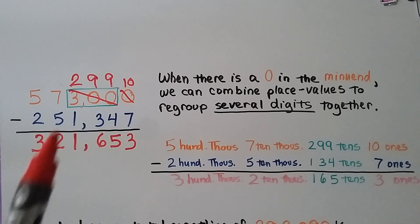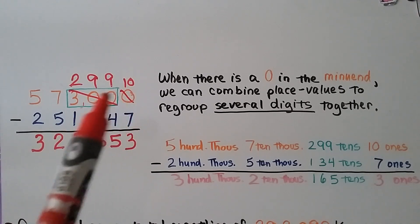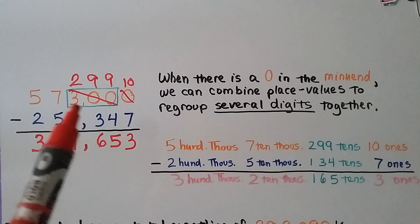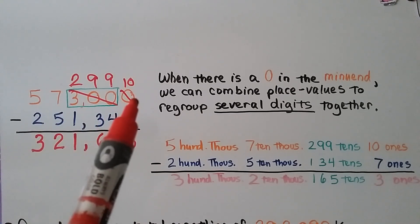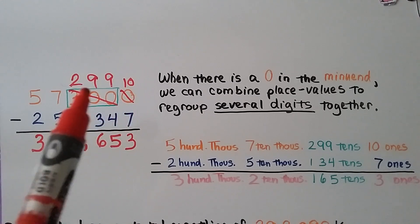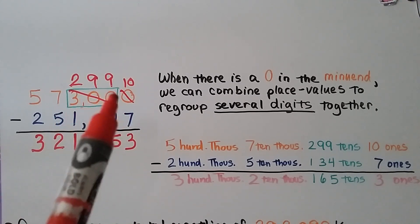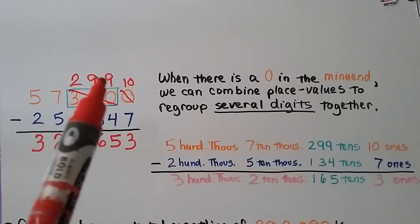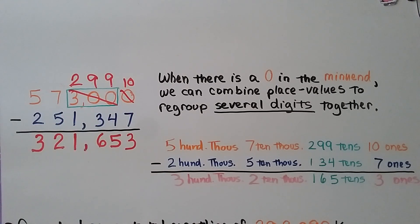We couldn't regroup from those place values because they were all 0s, so we grouped them together. Notice I didn't include the ones place when we did this, because that's the one that needed the help — I regrouped the digits next to it. This 300 became a 299, one less, and then we were able to give one to the ones place.